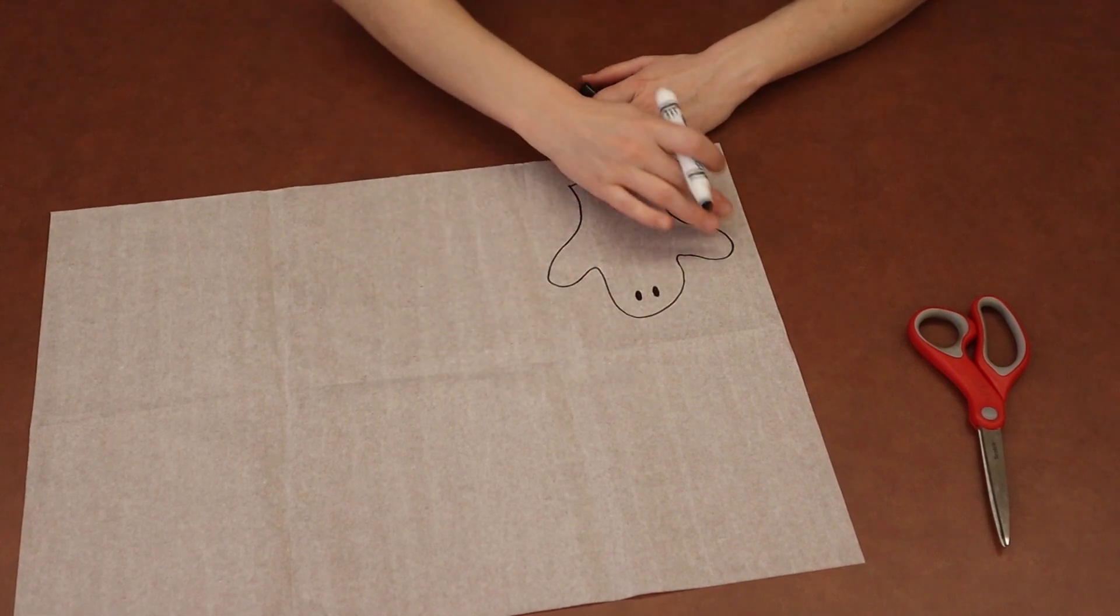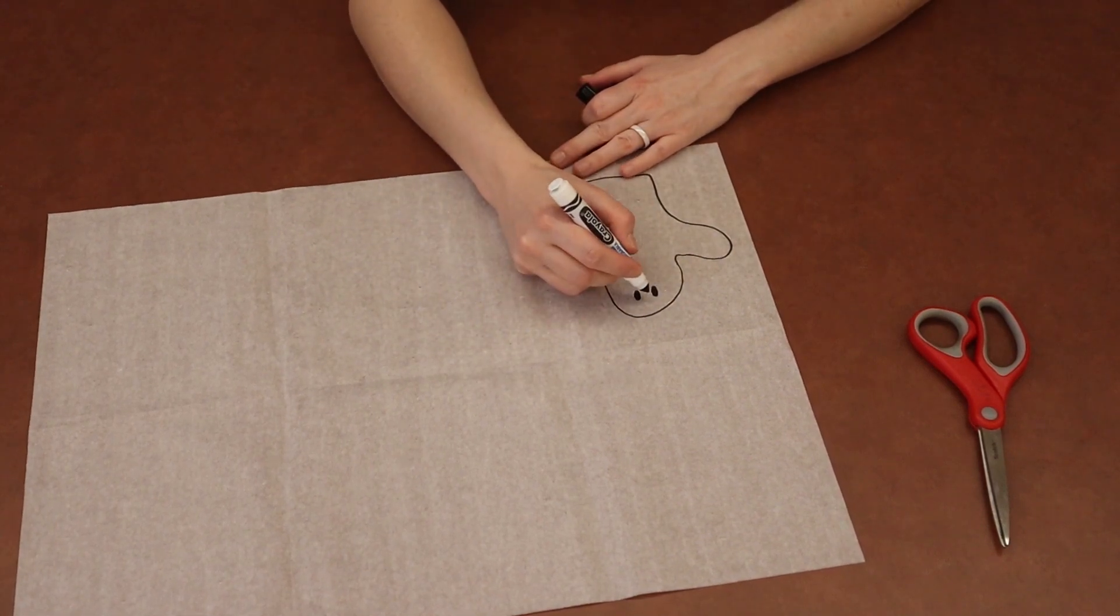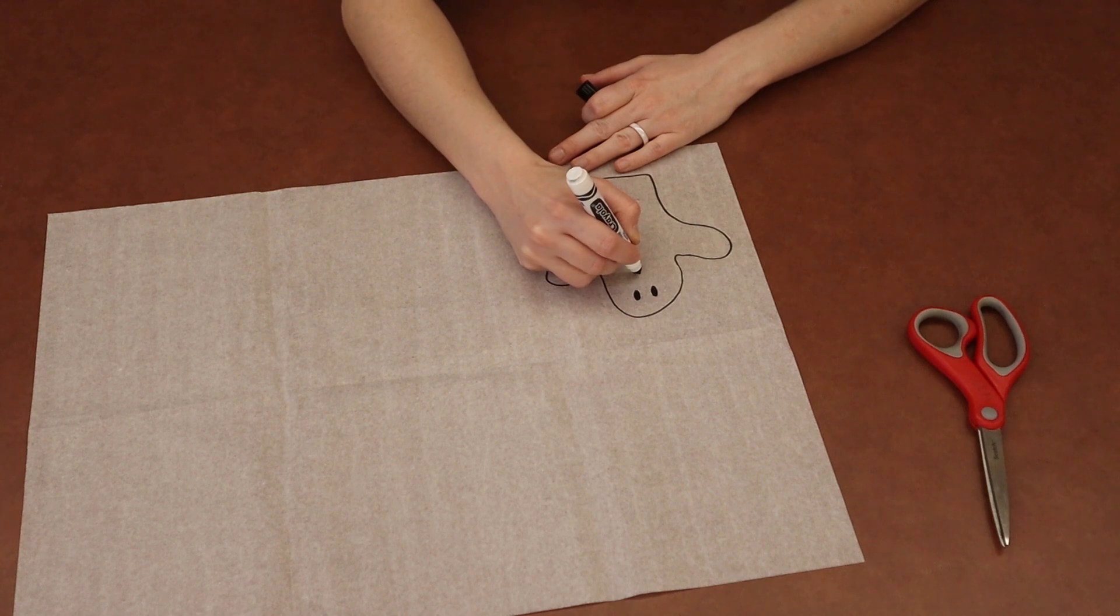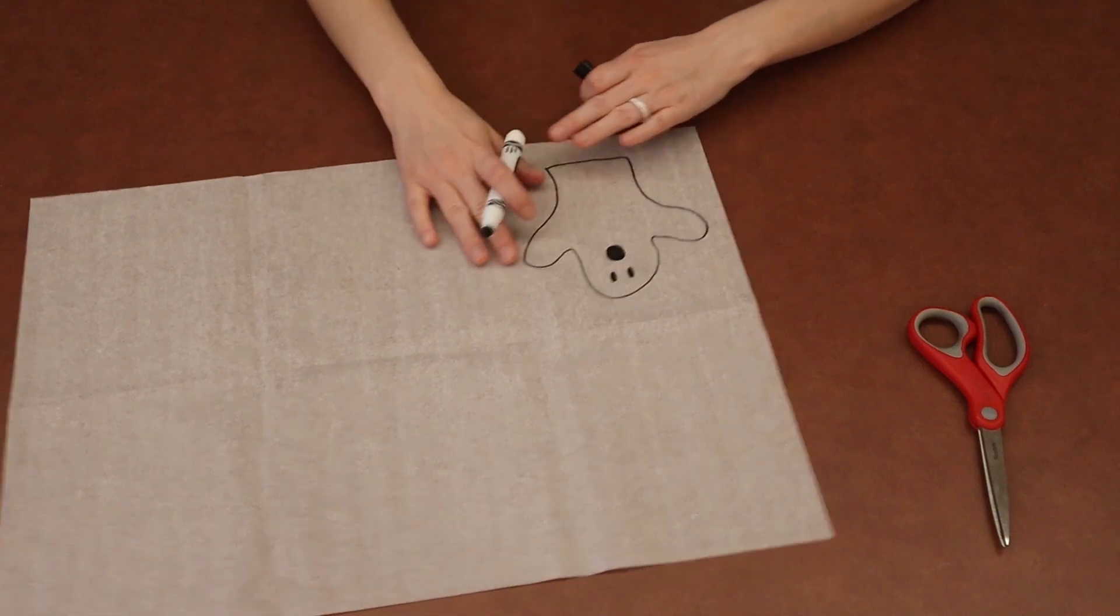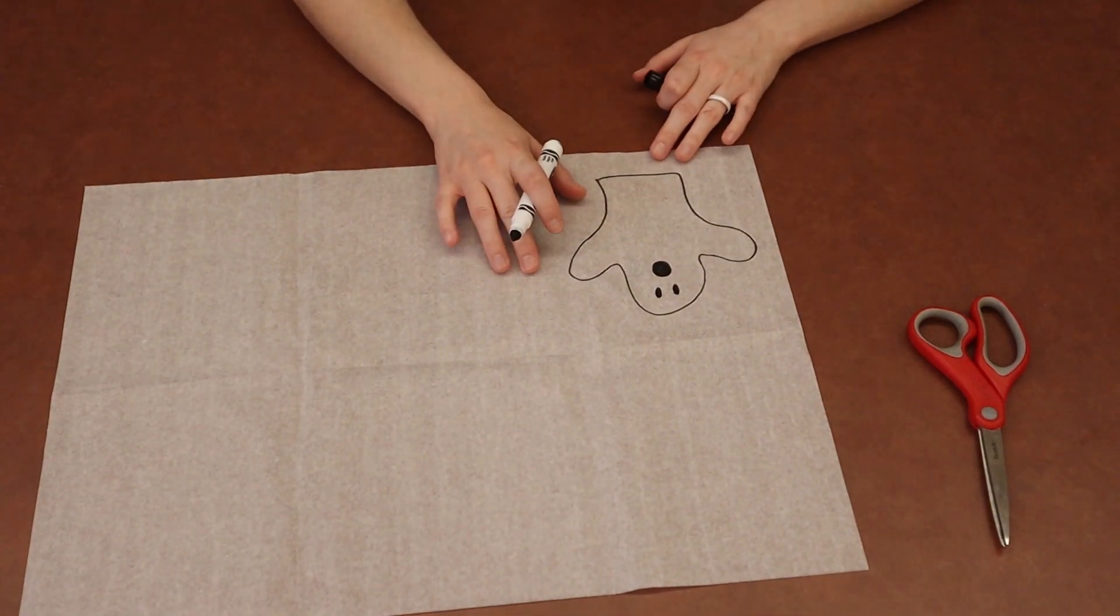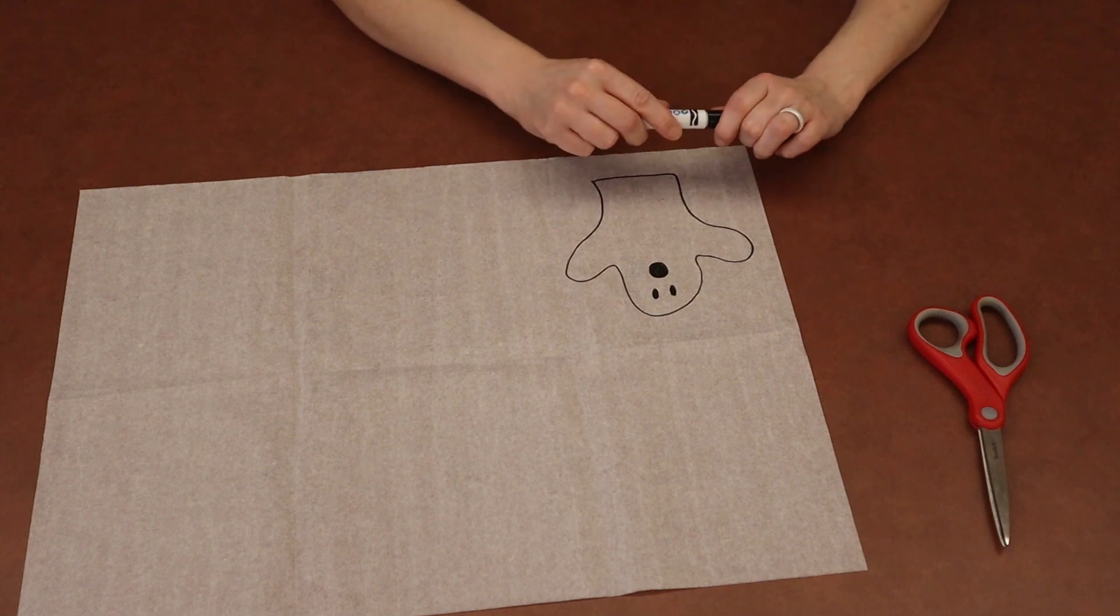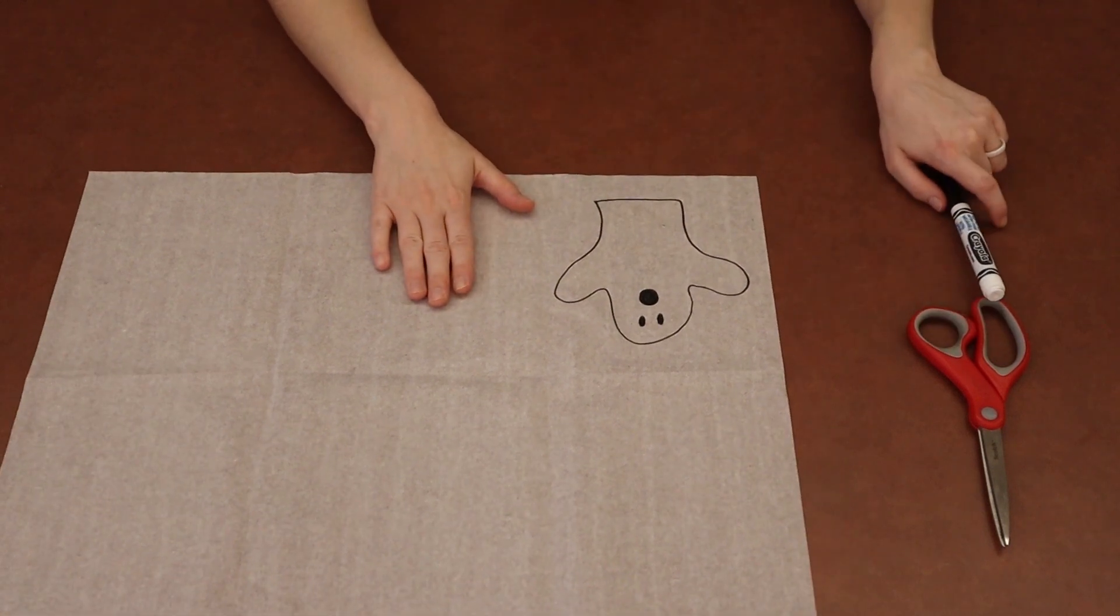But for your first one, I want you to keep it about as tall as your black marker. So once you've drawn the outline, what you can do is you can also add some eyes and a mouth. You can design your ghost however you want. You could add polka dots, you could add stripes, like I said, design them any way you want.